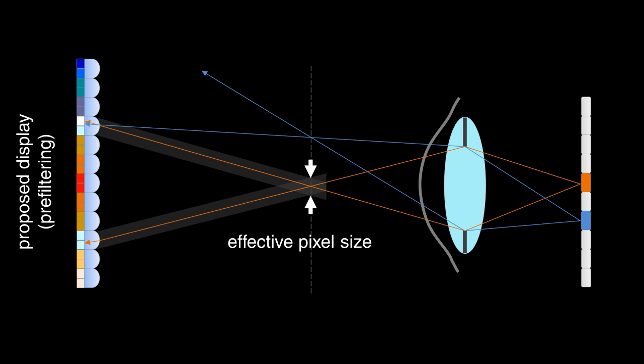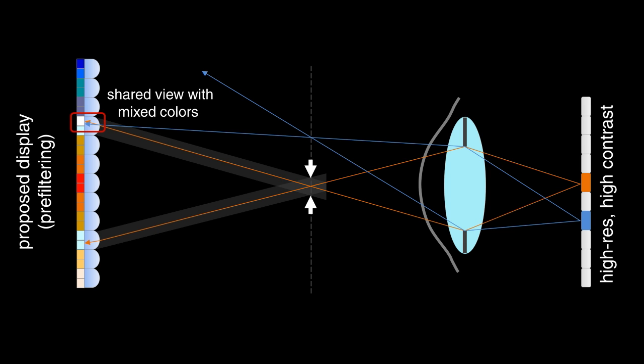Our method also uses a light field display, but since the light field is pre-filtered, the pixels are smaller and the resolution is higher. For some views, the colors are also mixed, but the contrast problem is reduced due to a higher angular sampling rate.